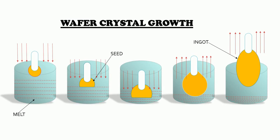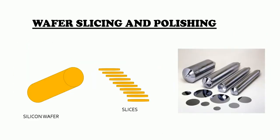The first step in wafer preparation is wafer crystal growth. Here silicon is melted into large containers and a small silicon seed, which is already doped, is dipped into the molten silicon. Due to the temperature difference between the molten silicon and the silicon seed, the molten silicon eventually starts depositing on the surface of the seed. This process is repeated until we get a large silicon crystal called the silicon ingot, which is then sliced into thin sheets known as wafers. The image on the right shows the actual image of a silicon ingot and the wafers.